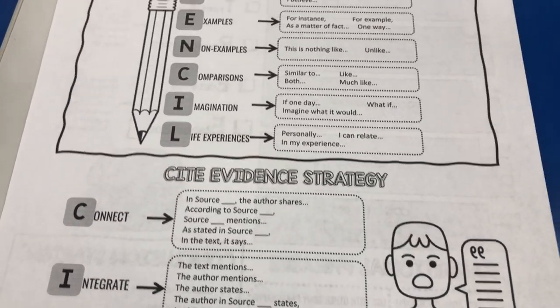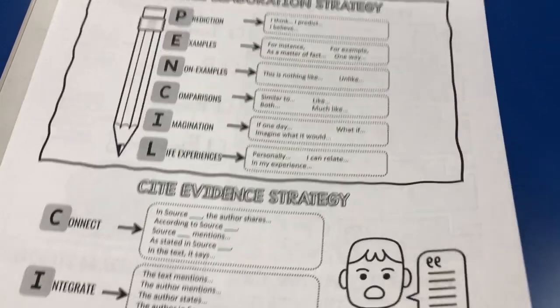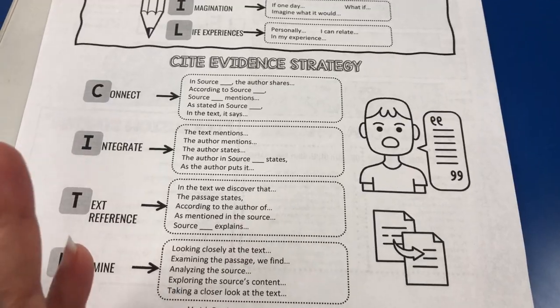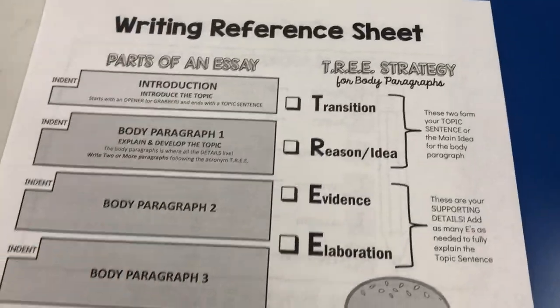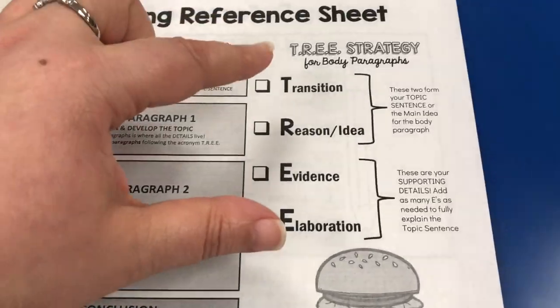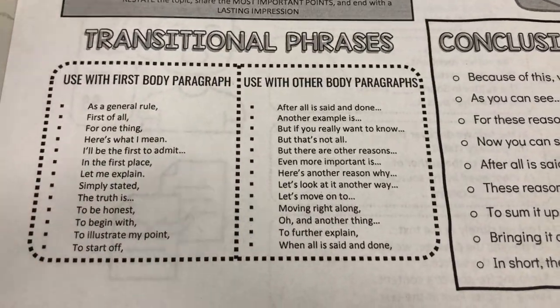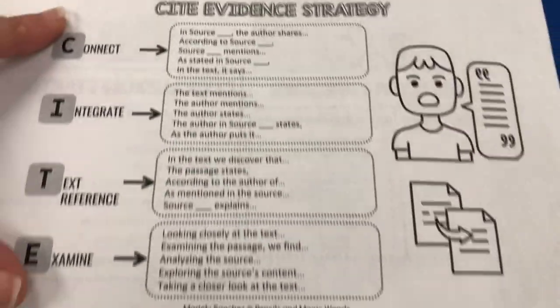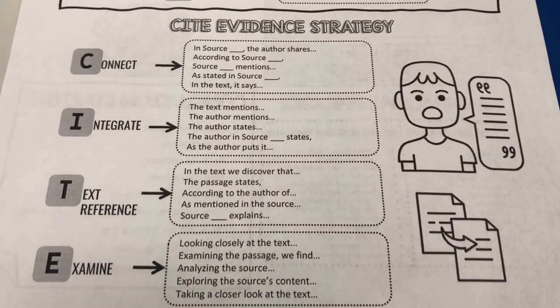I really should print a set of reference sheets, laminate them, and let students keep them in their desks. The reference sheet covers the parts of the essay, our tree strategy which makes a hamburger paragraph, ideas for transitional phrases, conclusion starters, the pencil elaboration strategy, and the cite evidence strategy — which gives all the different sentence starters to cite and reference the sources. That's pretty much what we did with block one.